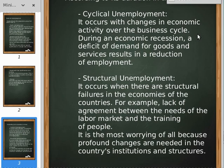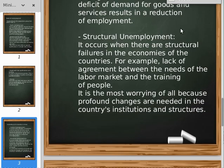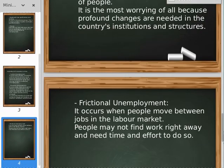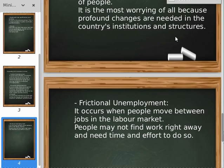The second type is structural unemployment. It occurs when there are structural failures in the economy of countries — for example, a lack of agreement between the needs of the labor market and the training of people. It is the most worrying of the problems about unemployment, because profound changes are needed in countries, institutions, and structures.